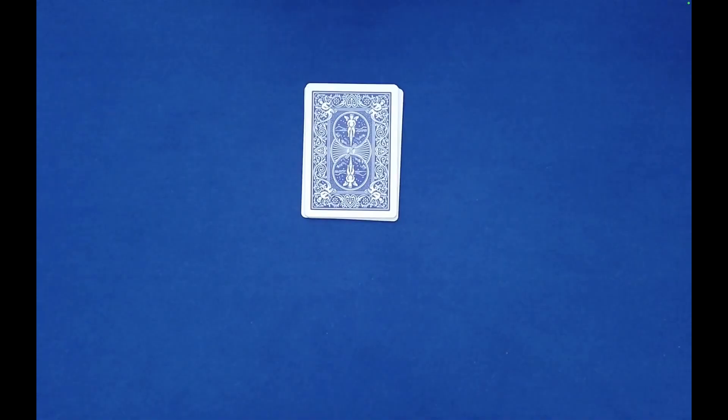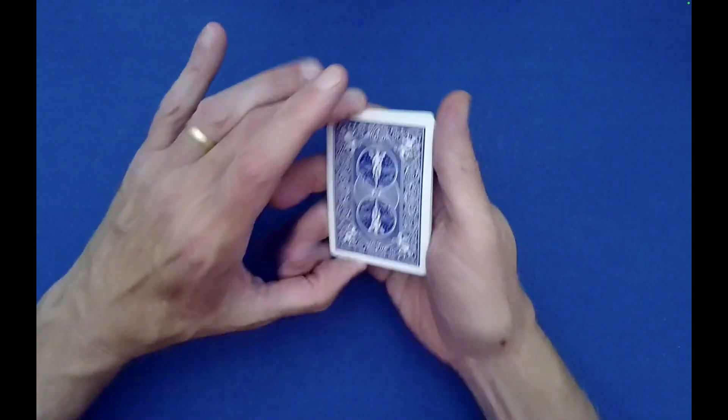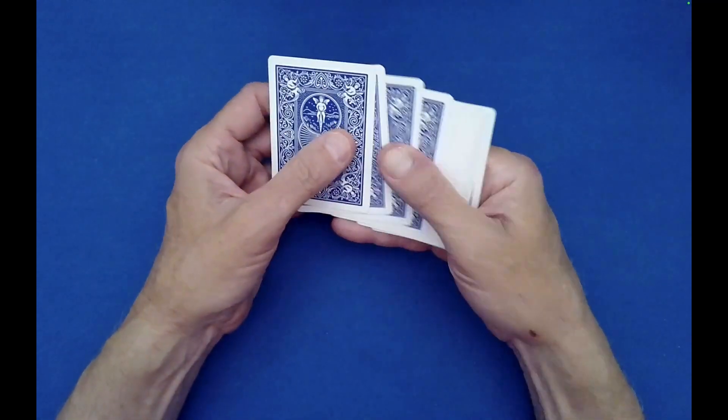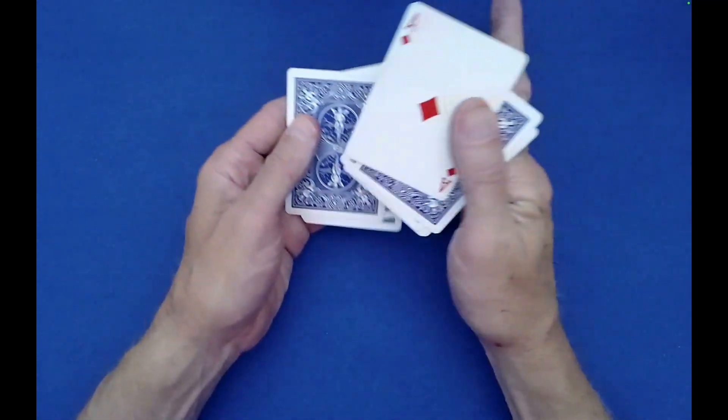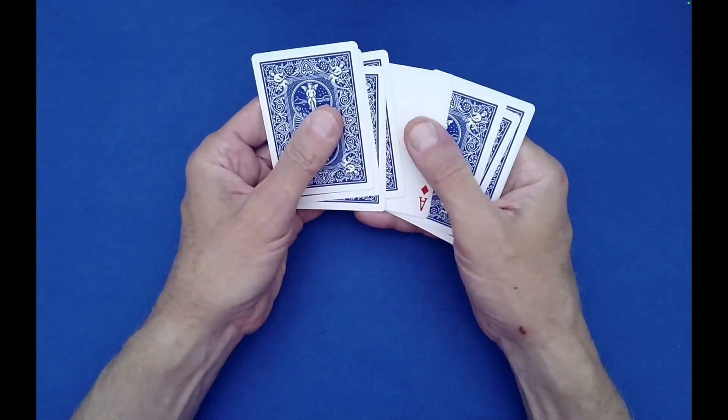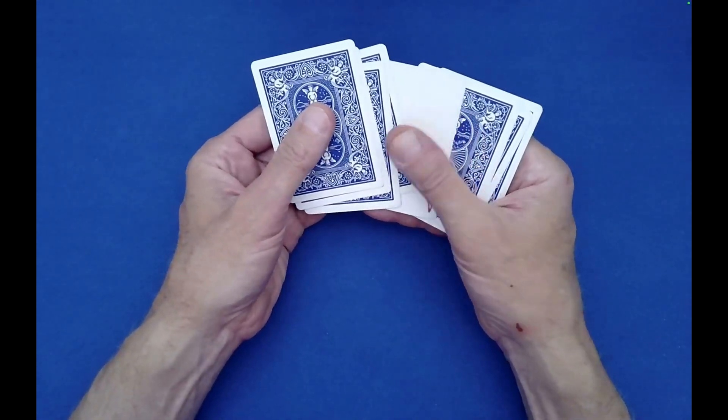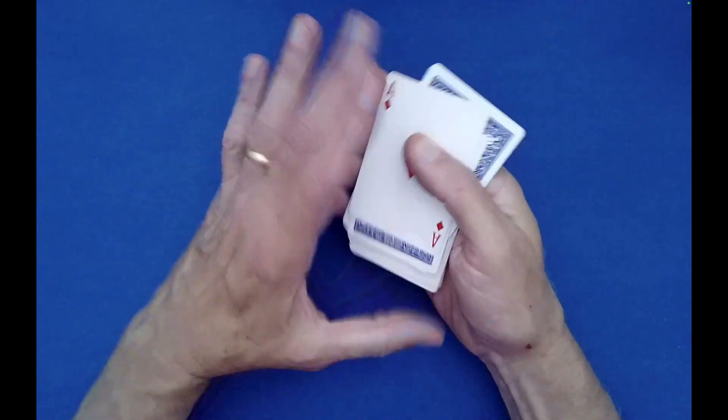Now once the spectator has made all of those choices, you as the performer simply need to take the cards and cut the ace of diamonds to the top. So all that means is you locate the ace, the cards above the ace get moved to the bottom, just like that.